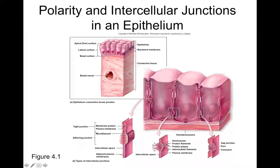You can expect to find tight junctions in most epithelial tissues because you don't want a lot of water crossing epithelial barriers. The adhering junctions help hold the cells really tightly together. Desmosomes also hold cells together very tightly. Epithelial tissues that need to be tough — like skin — benefit most from these structural junctions.